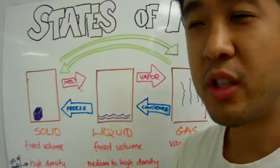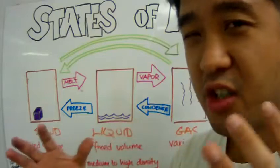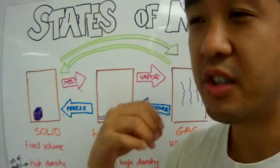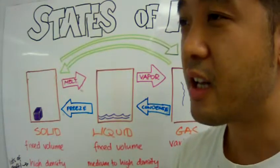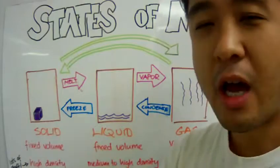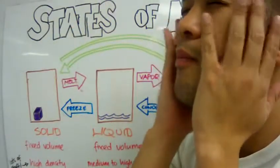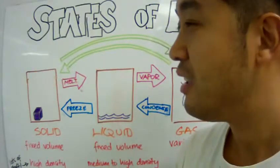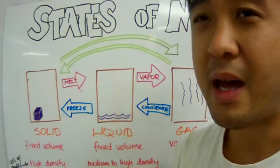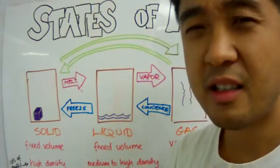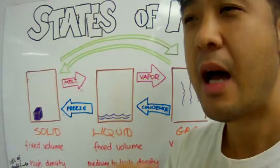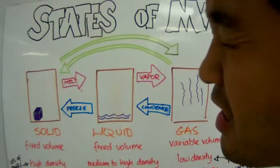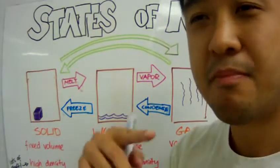Hey, so today we're going to talk about the states of matter. Everything in this world is in local states. We know that because you are able to touch it, you are able to feel it, you are able to go all over the place with it. The states of matter — what is matter? Well, matter is anything that occupies space and has mass.